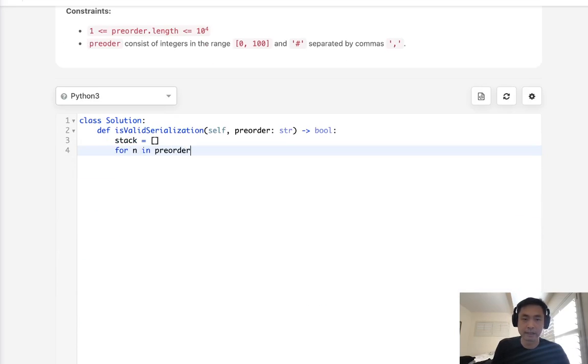keep in mind, this is a string. So what we'll do is we'll split it by the comma values. And first we'll append it to the stack.